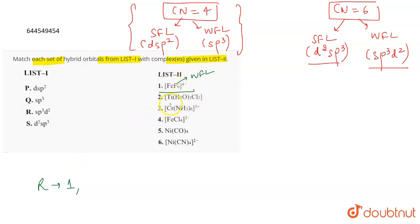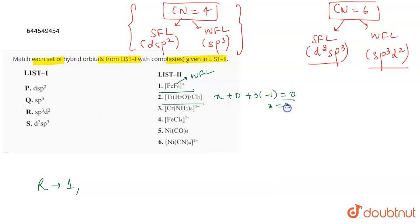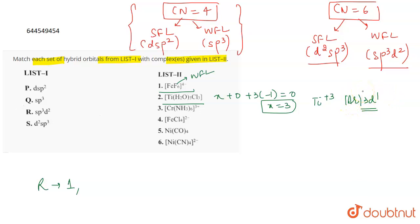The next complex is [Ti(H₂O)₃Cl₃]. For titanium here, titanium is in the +3 oxidation state: x plus zero (water) plus three Cl × (−1) equals zero, so x equals +3. Titanium³⁺ has the configuration [Ar] 3d¹, so it will be unpaired and paramagnetic in any case.